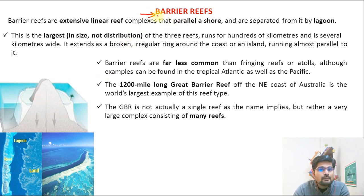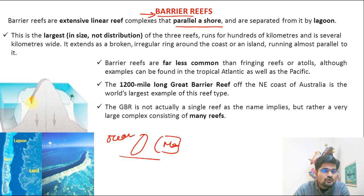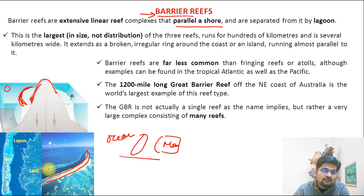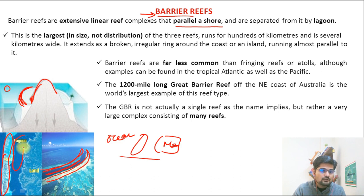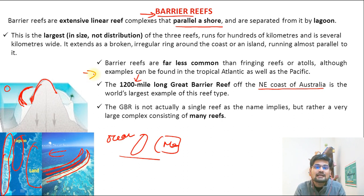The second type is the barrier reef — the word itself implies a barrier between the mainland and the open ocean. It runs parallel to a shore, and between the barrier reef and the land there is a lagoon. So the structure is: open ocean, reef area, lagoon, then land. The Great Barrier Reef of Australia, on the north-eastern coast, is the best example — the 1,200-mile-long Great Barrier Reef.